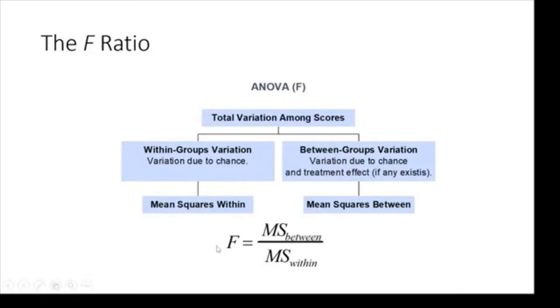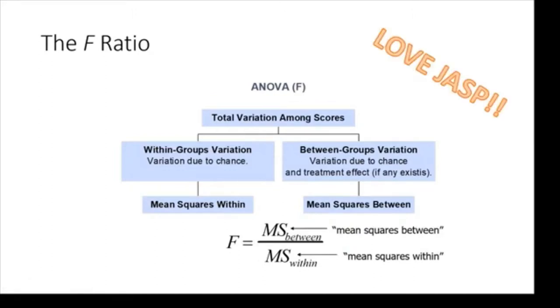And we calculate our F value as taking that mean squared between and dividing by the mean squared within. This will give us our observed F value, otherwise known as our calculated F value. And that will tell us, we can look at that and compare it to our rejection region to see if it's really large.